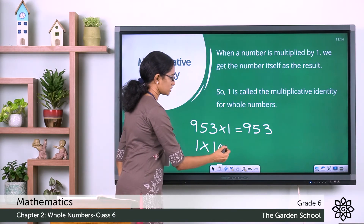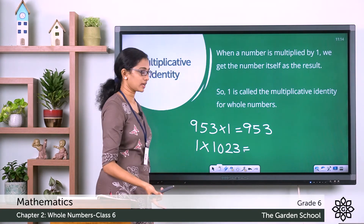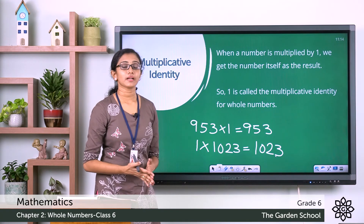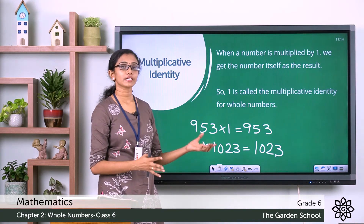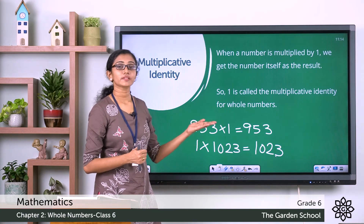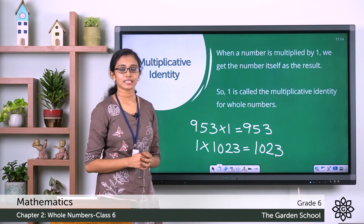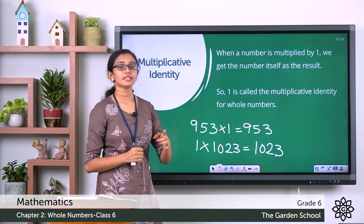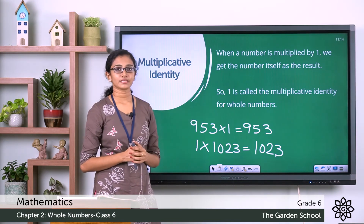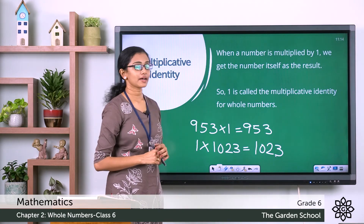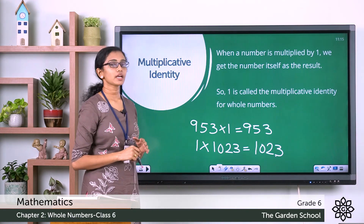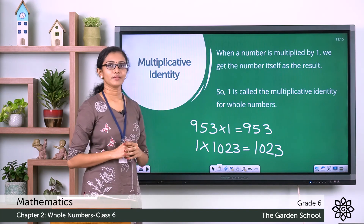And multiplying 1 by 1023 — the result is 1023 itself. You can multiply 1 with any number and get that given number itself as the product, so the identity of that number remains the same. Therefore, 1 is the multiplicative identity, or identity element, for multiplication of whole numbers. When a number is multiplied by 1, we get the number itself as the result — so 1 is called the multiplicative identity for whole numbers.